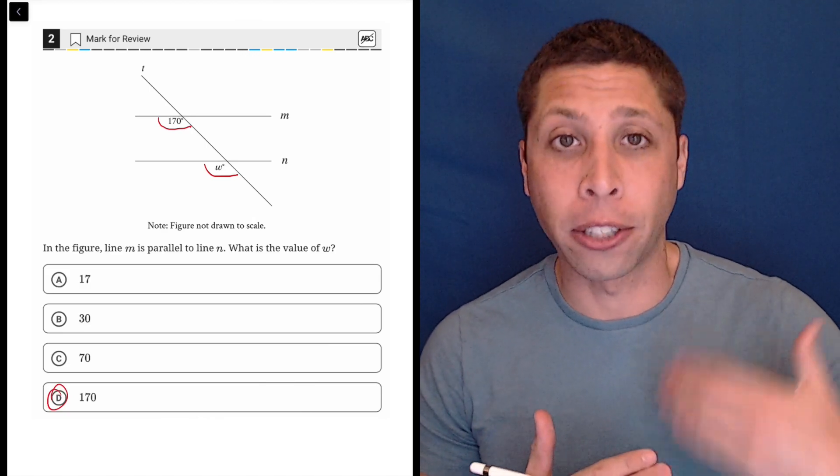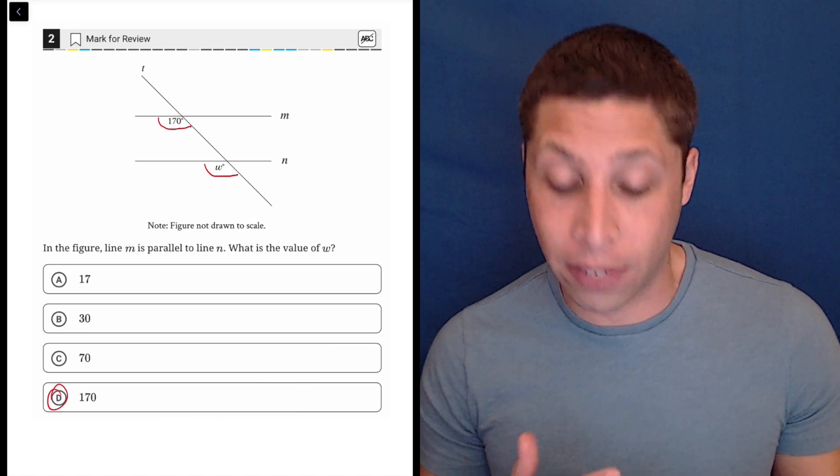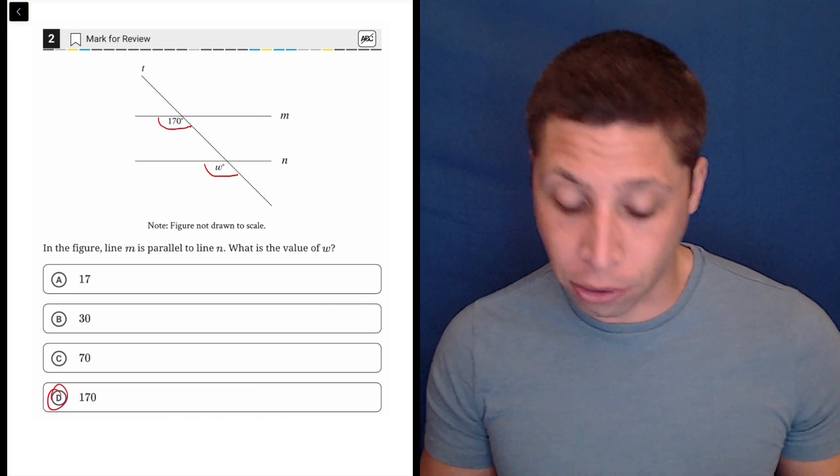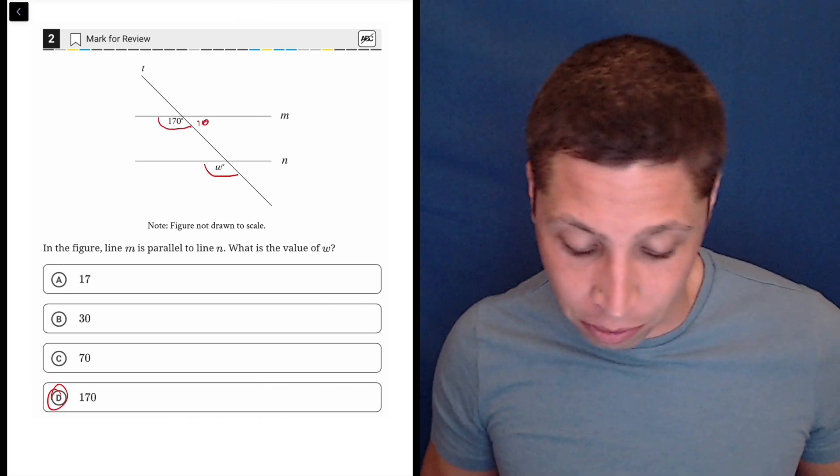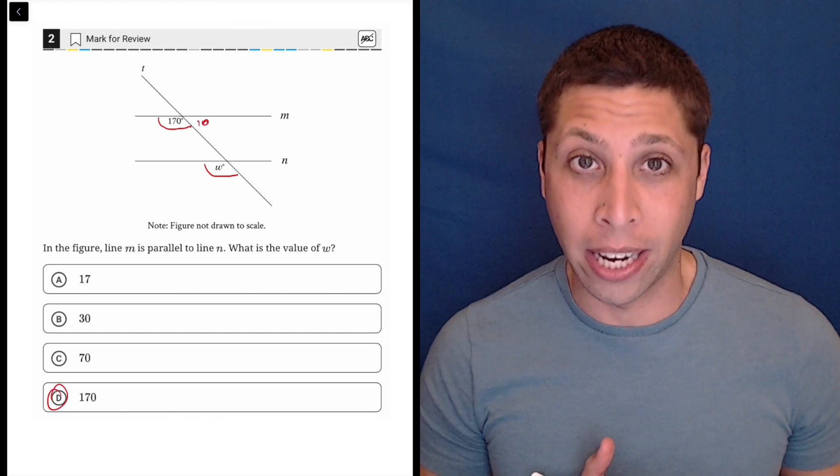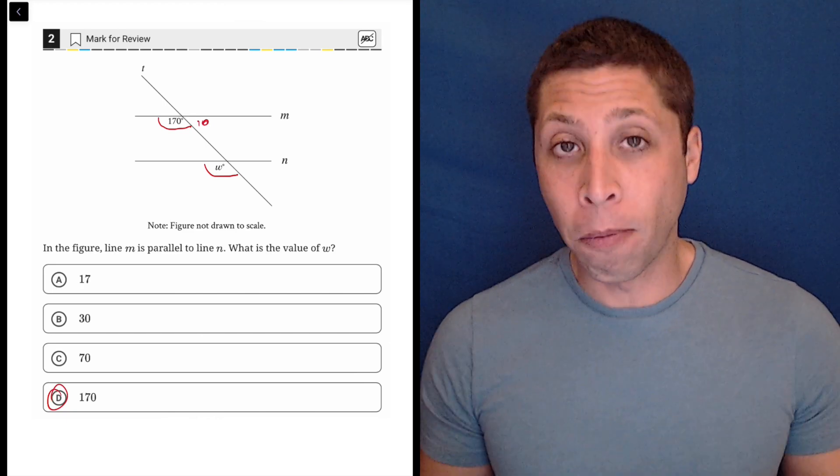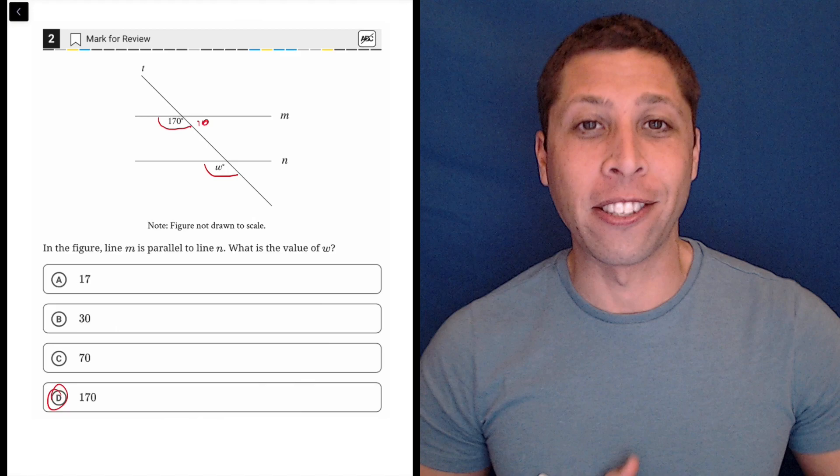So we either have angles that are congruent, like these two, 170 each, or we have angles that are supplementary, meaning that angles like this would be 10 degrees—it's supposed to be a zero because we need them to add up to 180 if they're a linear pair. Hopefully all of that makes sense and this is an easy question for you.